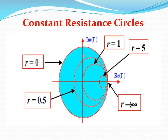Any Smith Chart consists of two sets of circles. Look at the circles — they start emanating from one end. These circles are called as constant resistance circles. This circle is for R equal to 1, R equal to 0.5, R equal to 0, and this value is going to be R equal to infinity. R equal to 0 — this point represents the open circuit point. And R equal to infinity — this point represents the short circuit point.